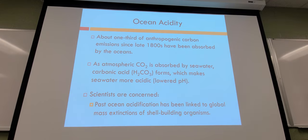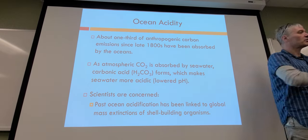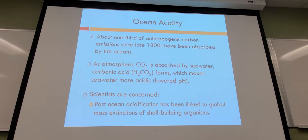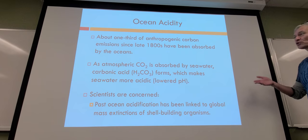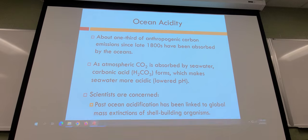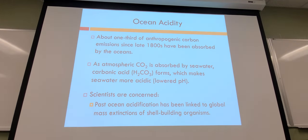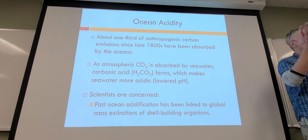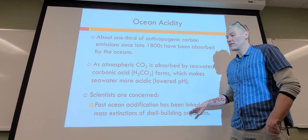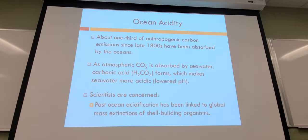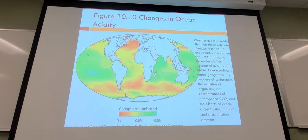Ocean acidity is increasing as we produce carbon dioxide — a fair amount is absorbed by the oceans. Some argue we don't need to worry because oceans absorb CO2, but much of it isn't absorbed, and what is absorbed changes ocean acidity. Looking through fossil records, huge mass extinctions often came about through changing ocean acidity levels, which is worrying given how much of the world's population depends on ocean food sources.